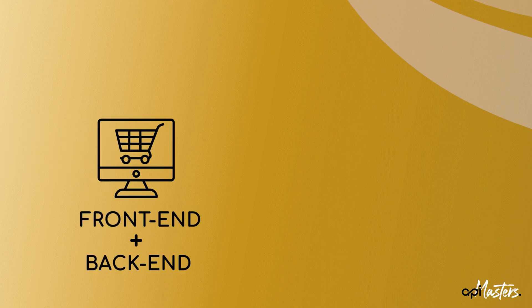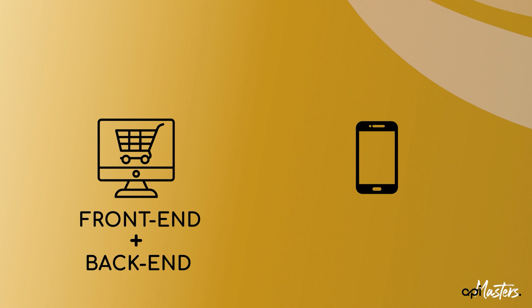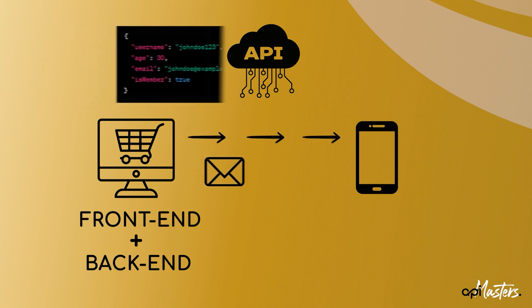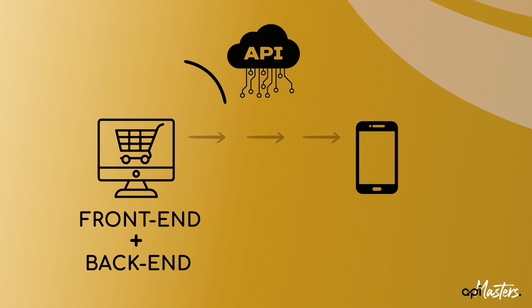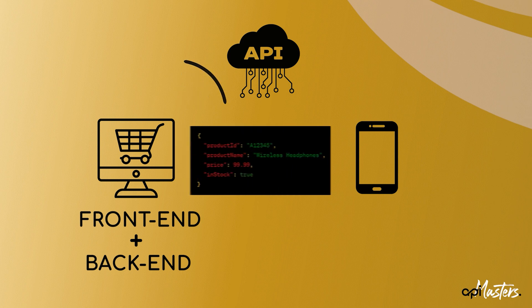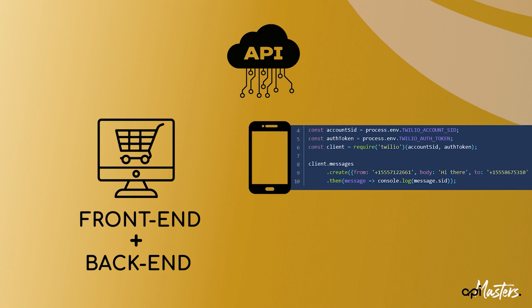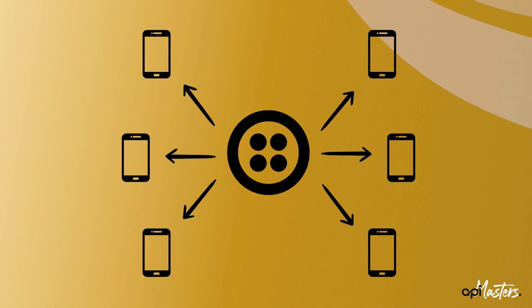Now let's switch to our second example. When you're using a webshop and the store is asking for your phone number to send you tracking information for your delivery, they will not be sending these messages via the phone network themselves. Instead, they will use an external service through an API — for this example, Twilio is a popular choice — that allows them to easily send messages to phones. Twilio's API works in a way where the shop sends your phone number and the message they want to send to Twilio, and Twilio will make sure that the message gets delivered to your phone. This way, the shopping site does not need to get involved with the details of how to send messages to phones. Twilio handles that for them for a small fee per message.